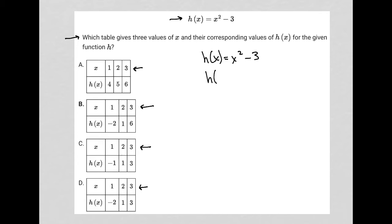So let's see, what happens when x is 1? Well, when x is 1, we'd have h of 1 equals 1 squared minus 3, which is just simply 1 minus 3, which is negative 2. So again, x is 1, h of x is negative 2.